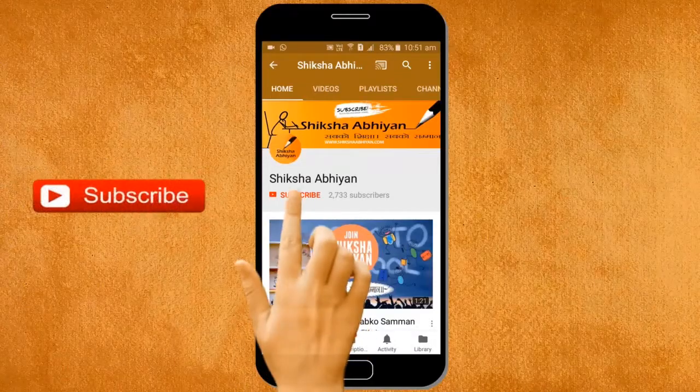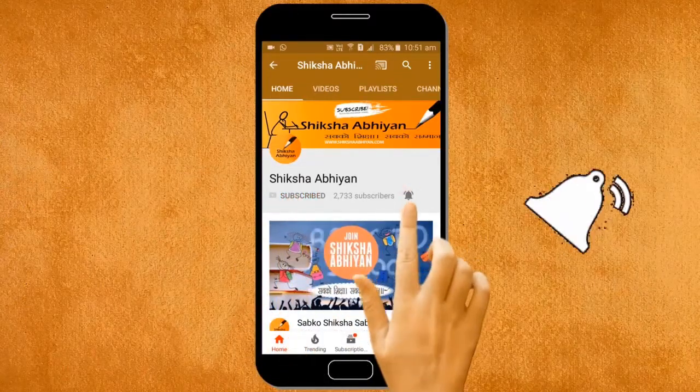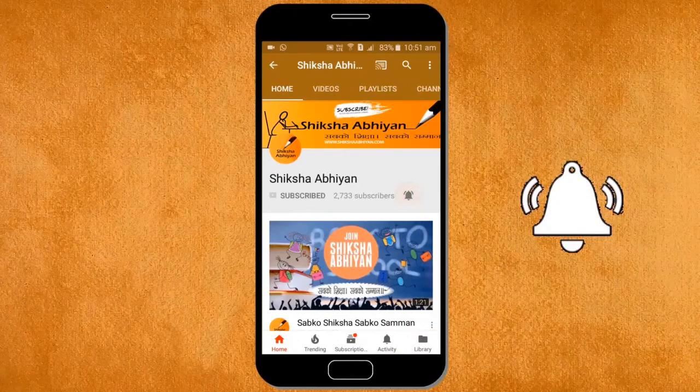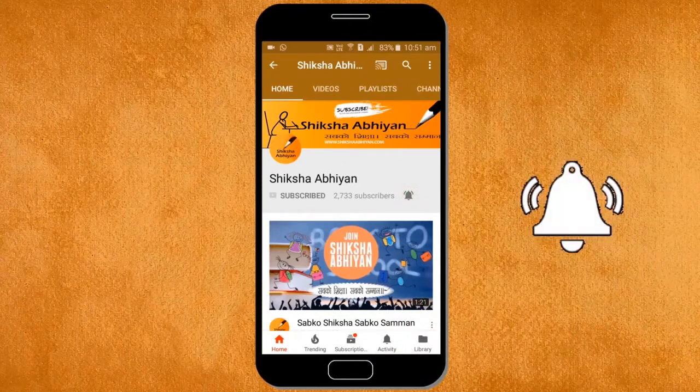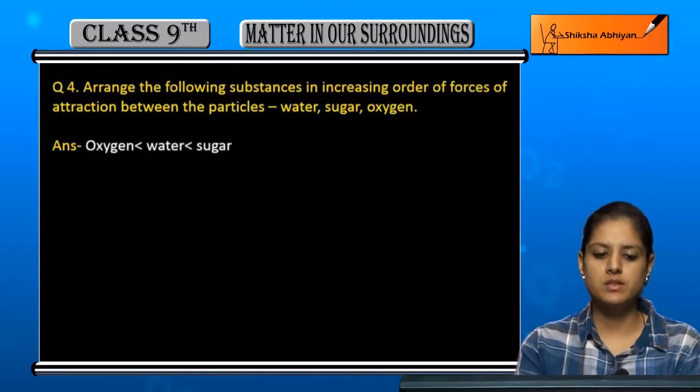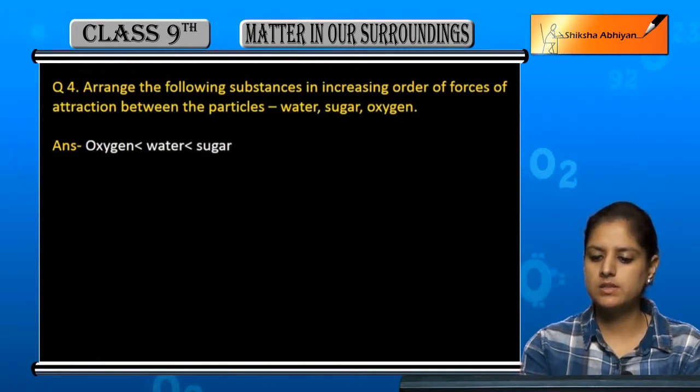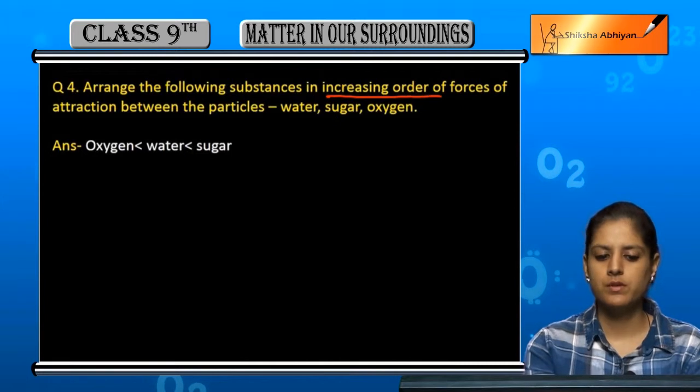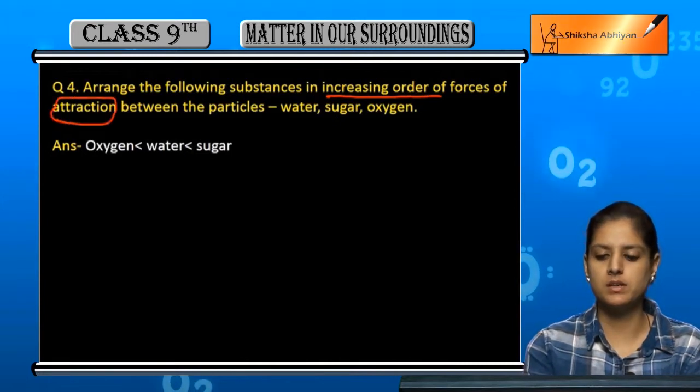Subscribe to our channel by clicking the subscribe button, click the bell button and enjoy the latest uploads from our channel. Now, question number four is: arrange the following substances in increasing order of forces of attraction between the particles.